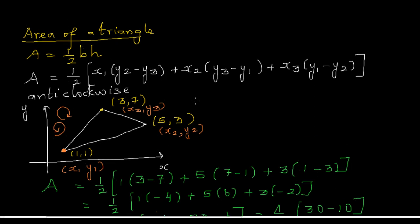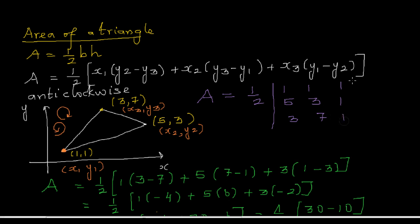For those who have learned determinants or matrices, this same formula can be written in matrix form. Area equals half times the determinant of the matrix: [1, 1, 1 / 5, 3, 1 / 3, 7, 1]. You need a square matrix, so you add the column of 1s as placeholders. The coordinates are listed, and if you find the determinant you get 20, so area is half times 20, which is 10.